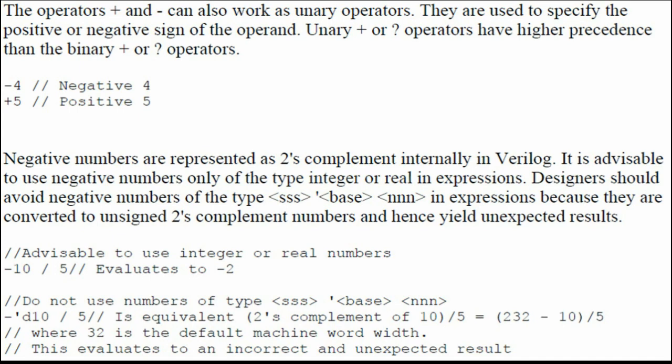We cannot use the positive and negative sign with all number formats — only with decimal or real numbers. Do not use the format: number_size'base_number. For example, using negative decimal 10 in that format is equivalent to the two's complement of 10; dividing by 5 gives an unwanted result (like 232 minus 10). So do not use negative or positive sign in the size'base'number format.